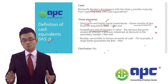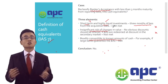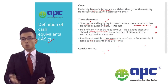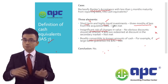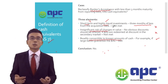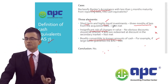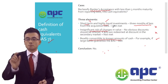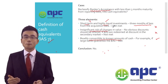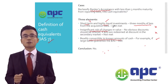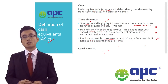Moving on to the third criterion: is it readily convertible to a known amount of cash? That means, is the banker's acceptance guaranteed by some party? Banker's acceptance is of course guaranteed by banks, and in most circumstances commercial banks have a low likelihood of going bust, so the third criterion is met. However, because the first and second criteria are not met, my suggestion is not to reclassify the banker's acceptance from other receivables into cash and cash equivalents.